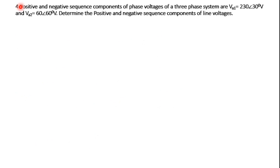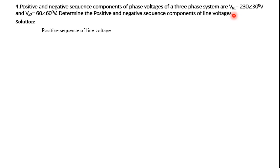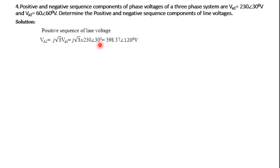Let us solve a simple numerical on this topic. Consider that the positive and negative sequence components of the phase voltage of a three-phase system are VA1 = 230∠30° and VA2 = 60∠60°. Determine the positive and negative sequence components of the line voltage.